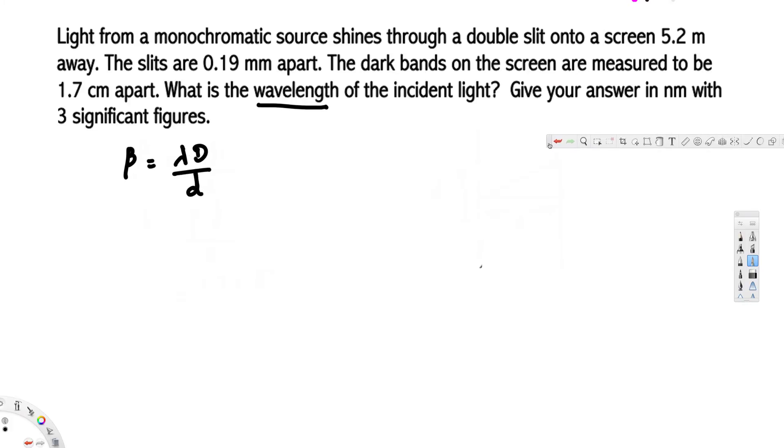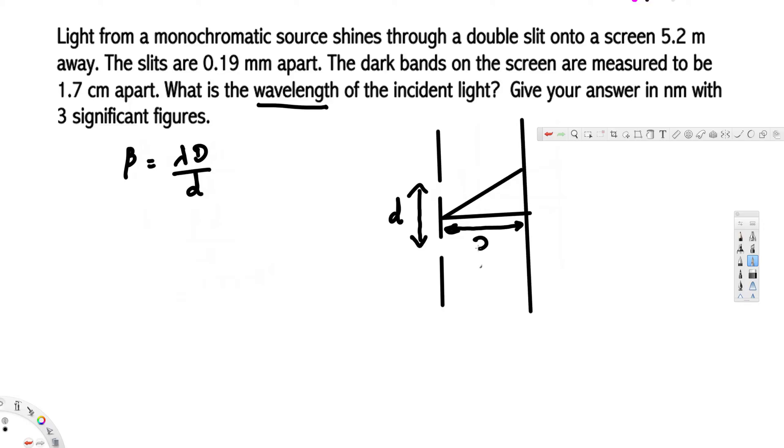Let's say this is our slit, and we have this distance. These are our slits. The slit separation is given by small d. This distance from the slits to the center of the screen is going to be the capital D.